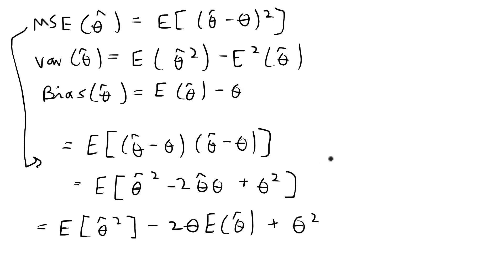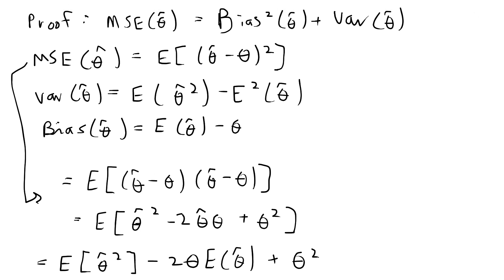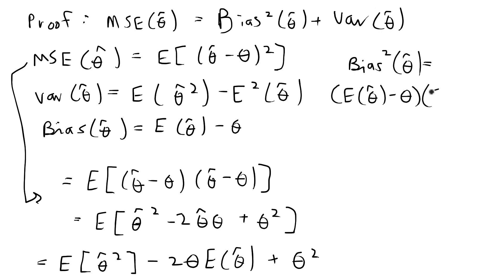For MSE, I would stop simplifying there. Next I'm going to show that bias squared plus variance can simplify to that same expression — if it can, then the two expressions are equal, meaning bias squared plus variance equals MSE. I'll also note that bias squared of theta hat equals the expected value of theta hat minus theta, times the expected value of theta hat minus theta.